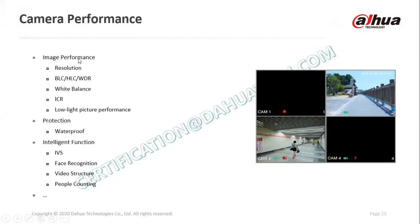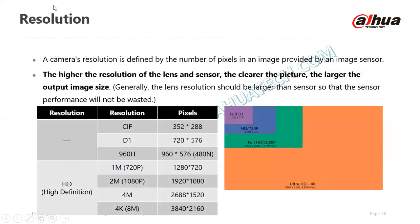We are going to do camera performance. I would suggest you pay attention to this part because most of the issues you face on site or in installation — errors you'll realize — can be fixed with the configuration we're going to talk about here. For camera performance we will cover information like resolution, HLC, BLC, WDR, and ICR. Basically, the resolution for a camera is the number of pixels a camera can output; the higher the resolution, the better the performance.